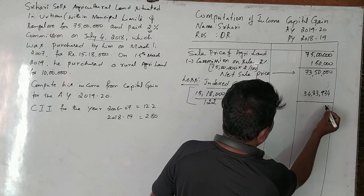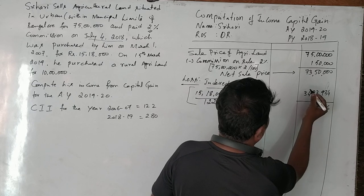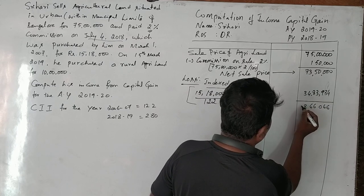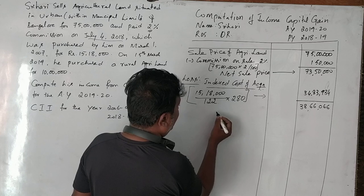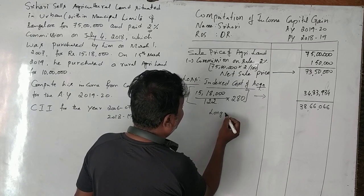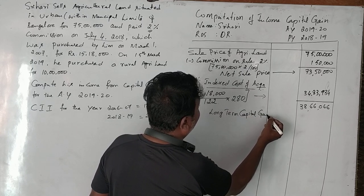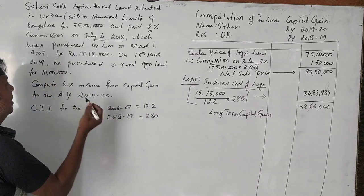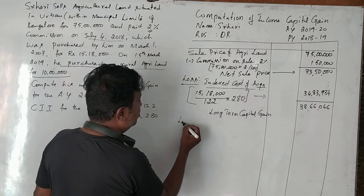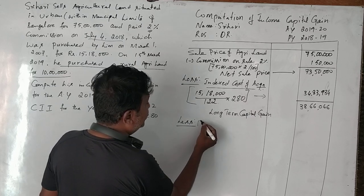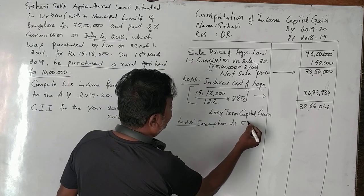Deducting the indexed cost of acquisition of 34,83,934 from the net sale price of 73,50,000, we get a long-term capital gain of rupees 38,66,066. Now we need to consider how to adjust the new rural agricultural land purchase of 10 lakhs under Section 54B.